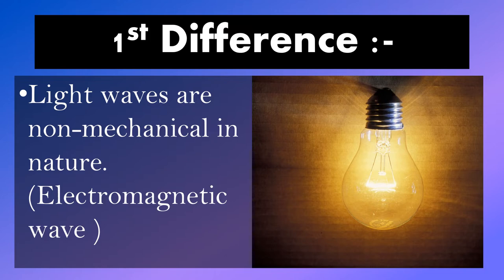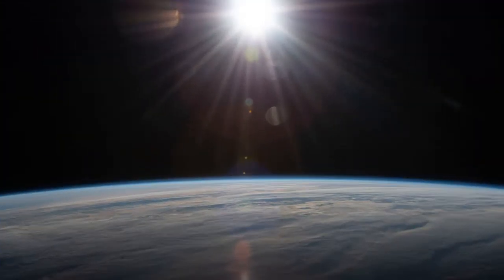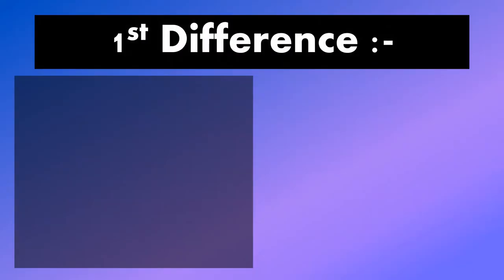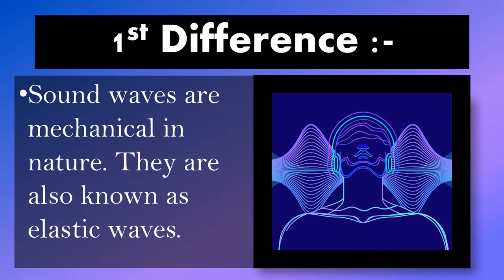One major difference is that light waves are electromagnetic in nature. This means that they don't require any material medium for their propagation. They can even travel through vacuum, which is how the sun rays reach the earth.